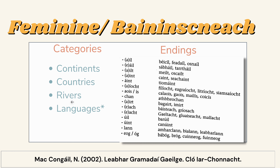All of these do come with the occasional exception — for example, for languages, Béarla, which is English, is masculine. But mostly languages, rivers, countries, and continents will be feminine. Apart from that, we can tell by the endings of words in Irish — the endings of words give away if it's feminine or masculine. If these endings appear at the end of a word, that word will usually be feminine: endings like -áil, -íl, -eáil, -áil, -chan, -úil, -lann, and -eog or -óg. And there are loads of example words here for masculine endings as well.